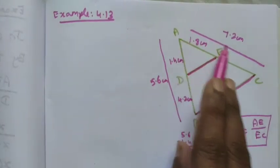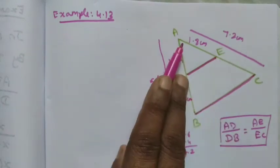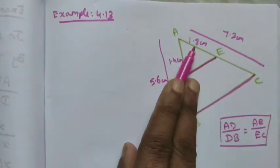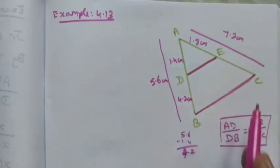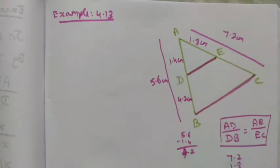So 5.6 minus 1.4 gives us 4.2 centimetres. The value of AC is 7.2 centimetres, and from A to E is 1.8. We want to find EC, which is 7.2 minus 1.8. So 12 minus 8 is 4, and 6 minus 1 is 5, giving 5.4.